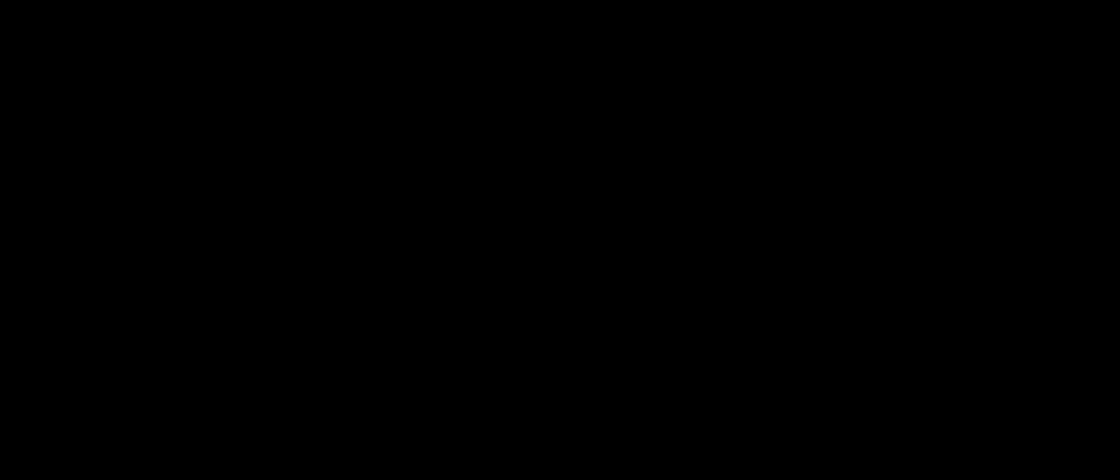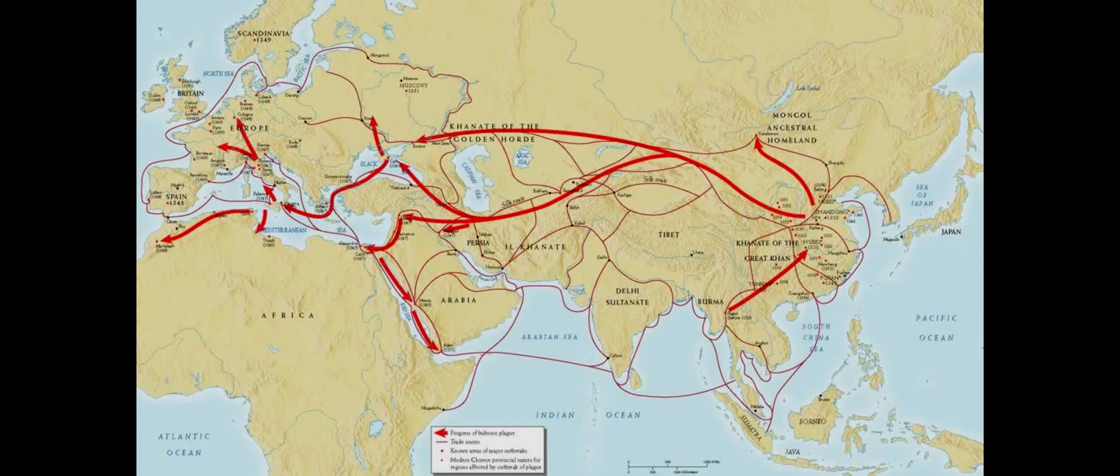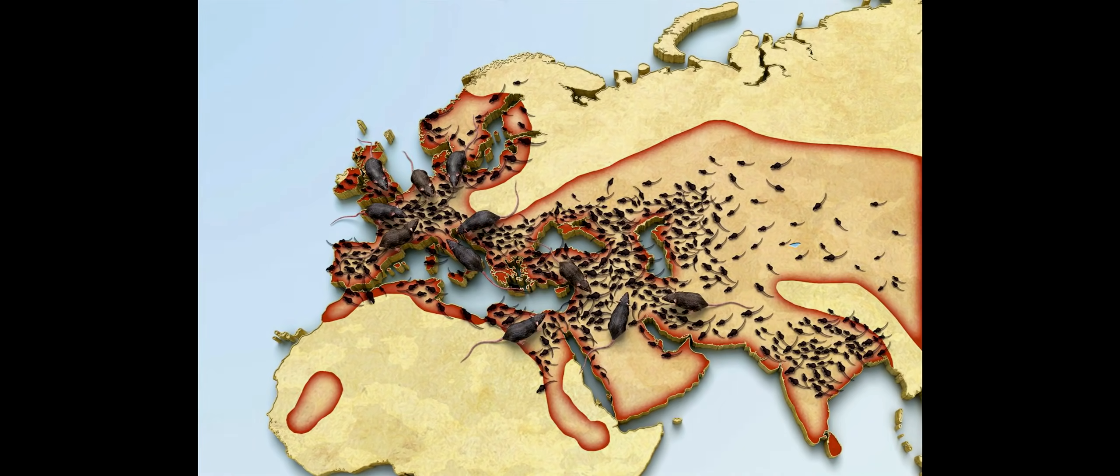The pandemic was mostly concentrated in Eurasia, while predominantly having a larger effect on Europe between 1346 to 1353.